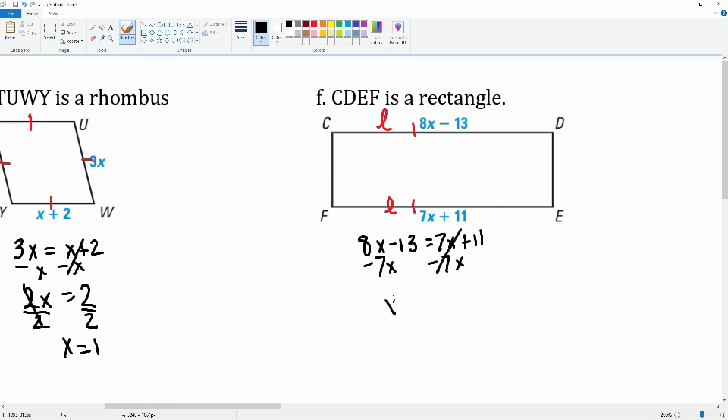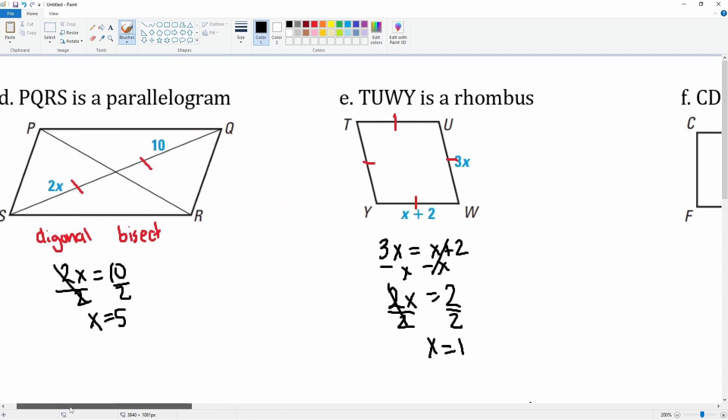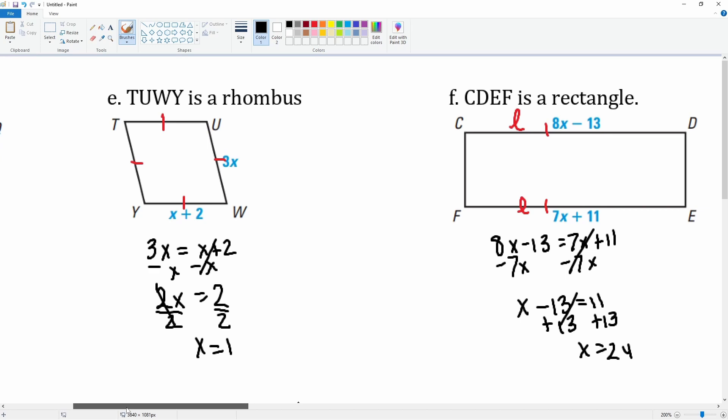This cancels, leaving you with just an x. Minus 13 is equal to 11. Plus 13 to both sides, this cancels, leaving you with x is equal to 24. So there you go, that is how we solve for the variables in every one of these shapes.